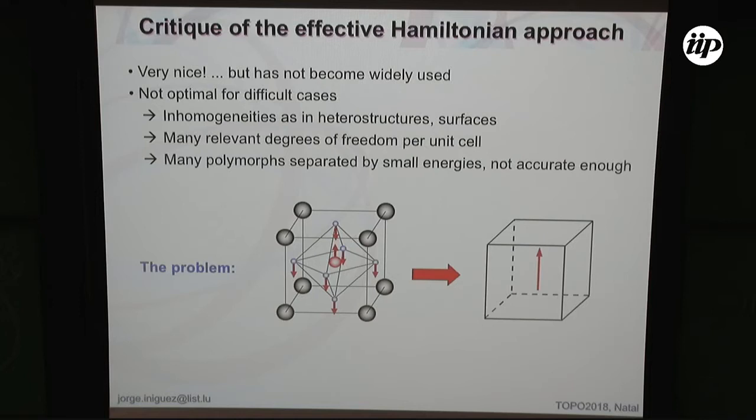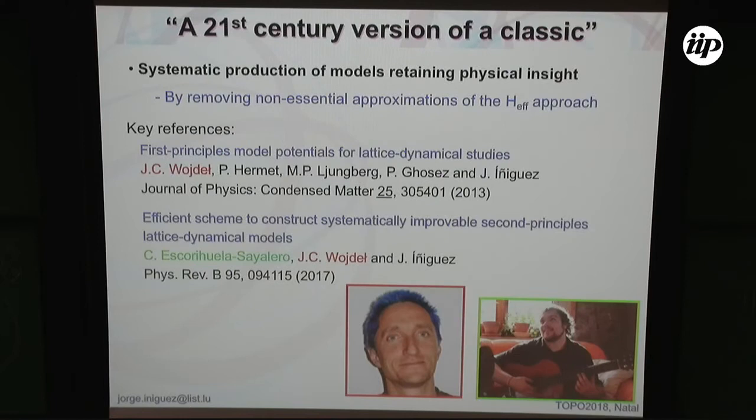Making this reduction also becomes increasingly difficult for more complicated cases. Our approach to tackle this problem is to simply remove it. Instead of reducing the number of degrees of freedom — gaining a factor of five compared to all degrees of freedom — we thought: do we really need this factor of five? Computers have sped up by much more than a factor of five. So maybe we can simply do everything, and that is what we are doing now.